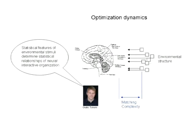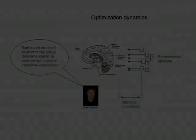As we have seen, Theodore Meynert showed us that internal organizations can be formed by ideas and thoughts, which come from experience. Today we have the term 'experience-dependent plasticity,' which means that the environment can shape the brain's plasticity, connectivity, and organization. This idea was further developed by Giulio Tononi, who stated that the statistical features of environmental stimuli determine the statistical relationships of neural interactive organization. I would argue that this matching complexity is a dynamic process, because the environment changes all the time and the brain changes, and matching complexity is a dynamic distance that exists between what happens in the environment and the way the brain is organized.